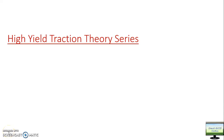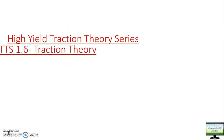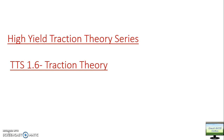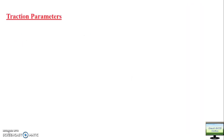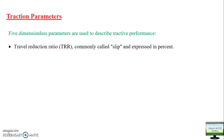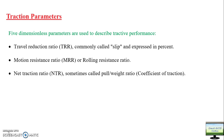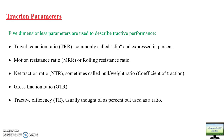Hello friends. This is my next video in the high yield traction theory series. In this 1.6 video, I will explain the concept of traction theory. Moving ahead, I was discussing the tractive parameters — there are 5 dimensions in this parameter for tractive performance. I have already explained the concept of slip and the concept of motion resistance ratio. In this video, I will explain the third parameter, which is net traction ratio, or coefficient of traction, also called pull by weight ratio. The fourth and fifth will be discussed in subsequent videos.